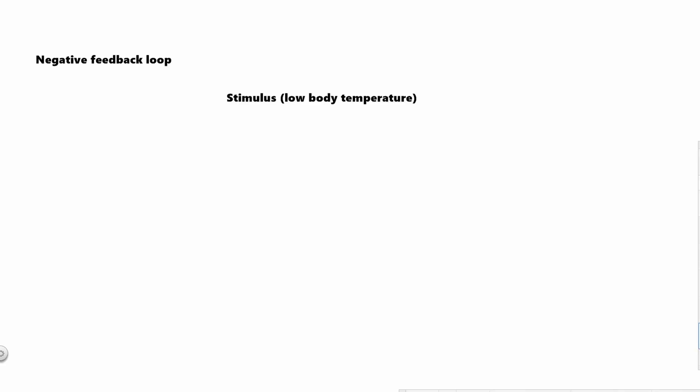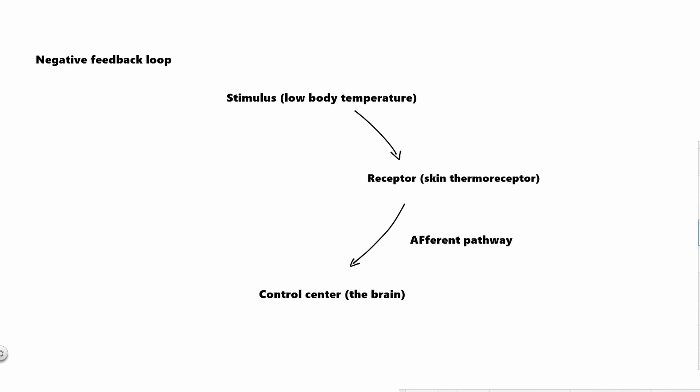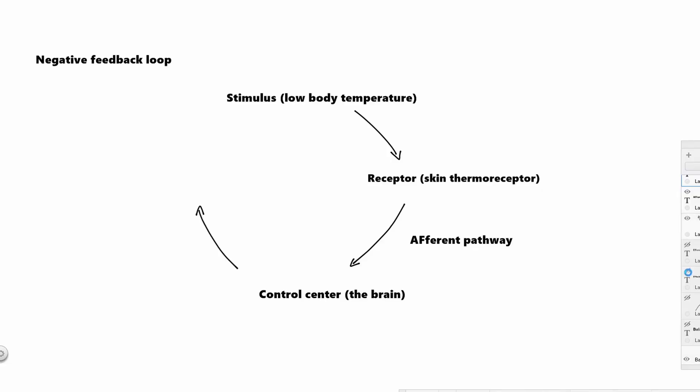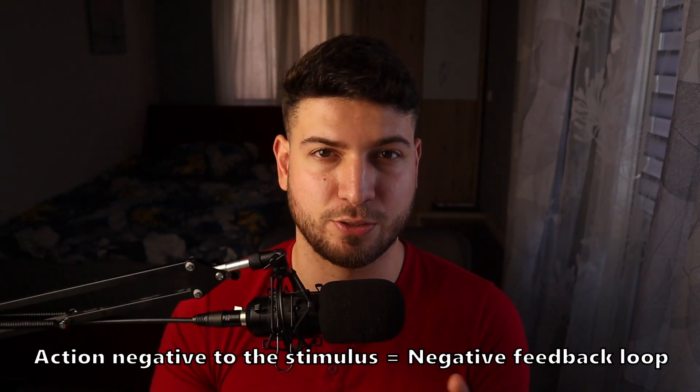The feedback loop can also increase the body temperature. Let's say your crush is not in the room anymore and you live in Canada, so your body temperature decreases. Now the low body temperature is the stimulus, and your receptors will send information about it to the control center via the afferent pathway. The control center sends information to the effectors — in this case, your muscles. Your muscles will start to shake, which you can experience as shivering. This will increase the body temperature and balance the stimulus. And again, the action of the body is negative to the stimulus — that's why it's called a negative feedback loop.